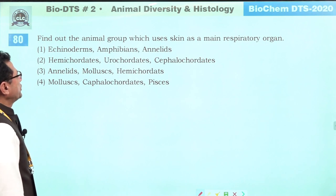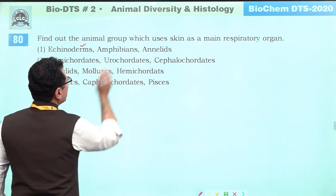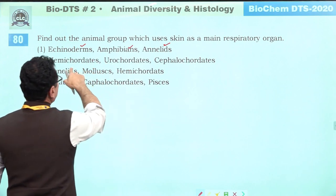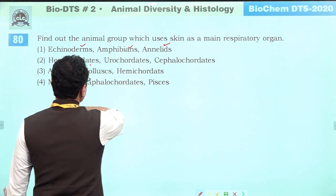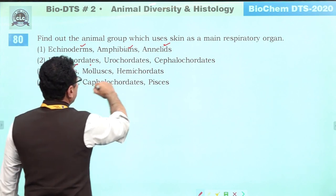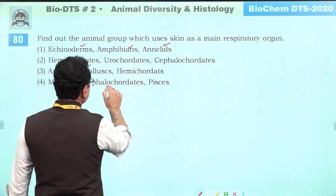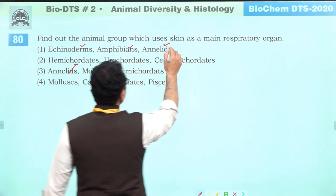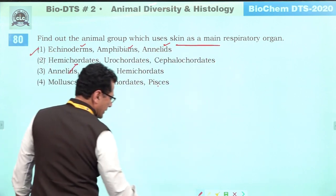The animal group that uses skin as the main respiratory organ includes echinoderms — correct; amphibians — correct; annelids — correct. Hemichordates use gills for respiration. Cephalochordates use skin, but in Pisces it is not the main organ. Skin as main respiratory organ: eighty — answer is one.